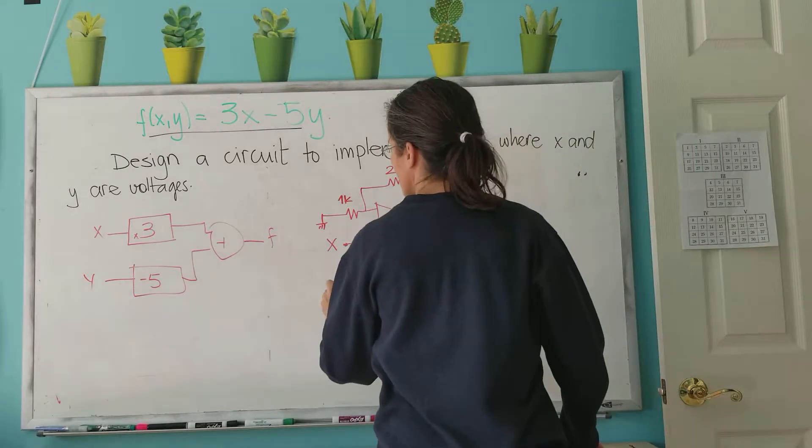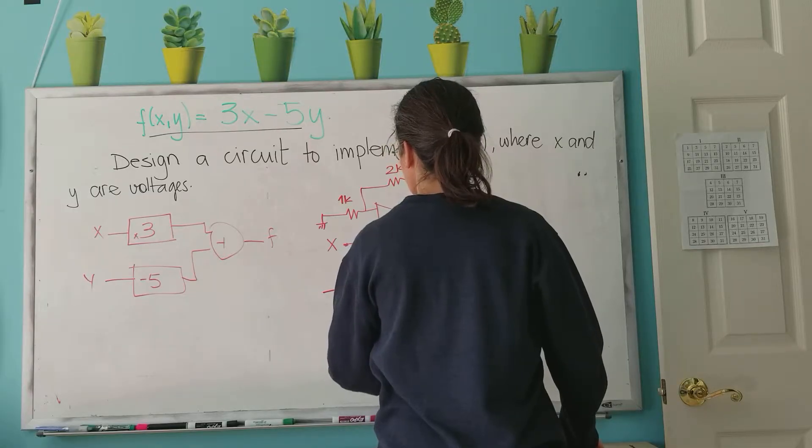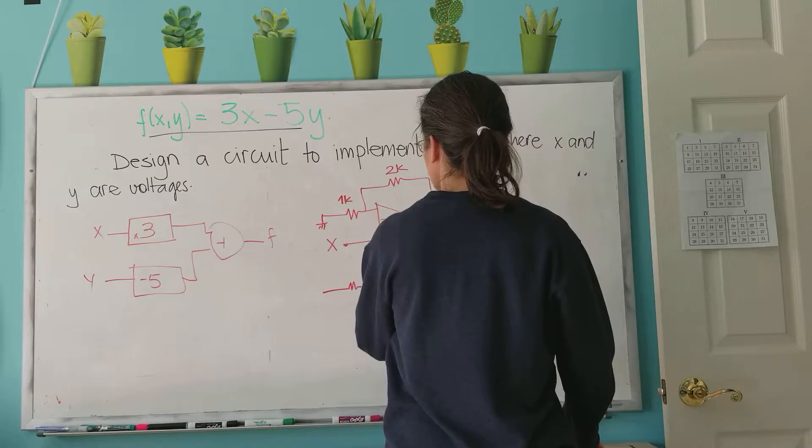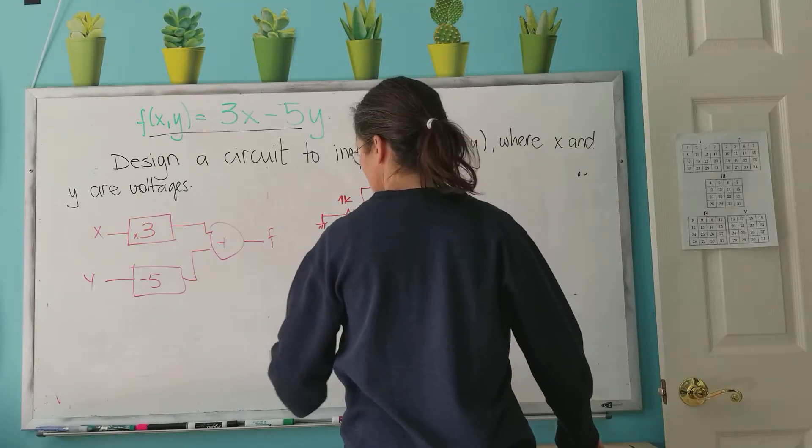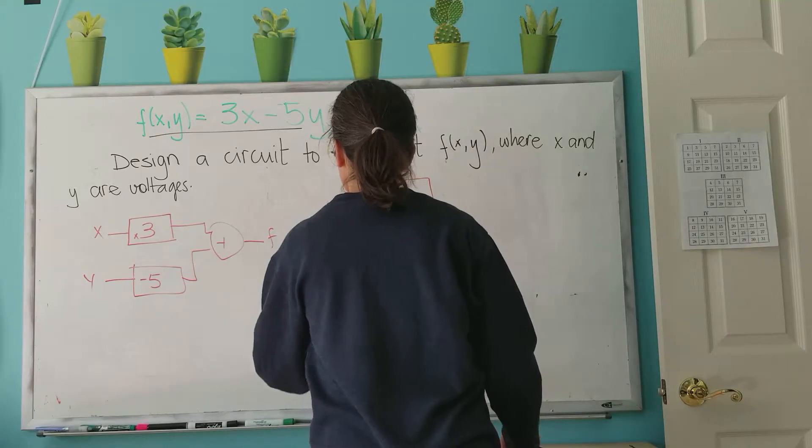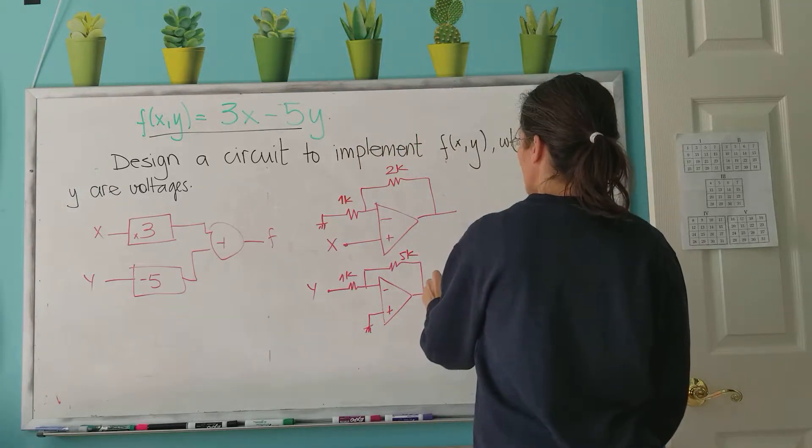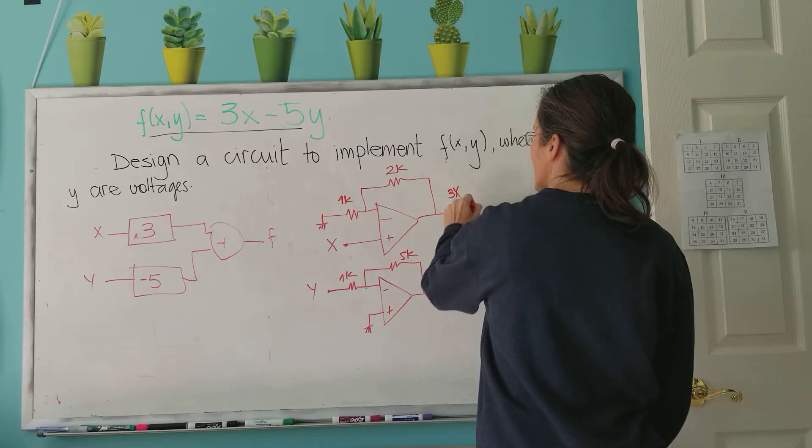And then -5. This is 5k, this is 1k. I can put this in zero - oops, that's not what I want. I want to invert it, so I'm going to put y here and this goes to ground. So now here I have -5y, and here I have 3x.